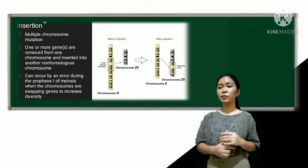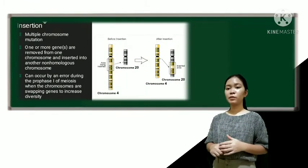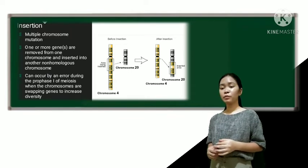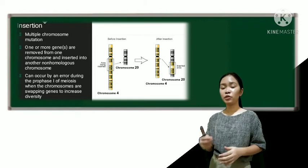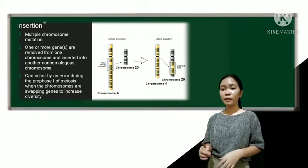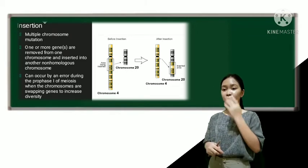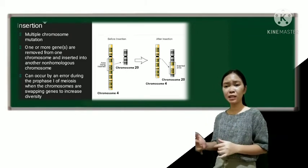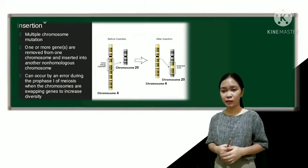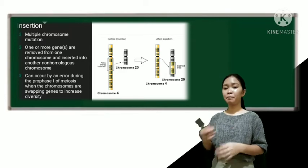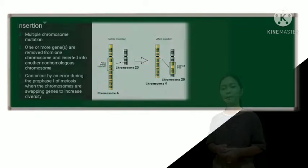So next is what we call the large-scale insertion. So here, it involves multiple chromosomes. For this type of insertion, there are one or more genes that are being removed from one chromosome and then being inserted into another non-homologous chromosome. So this can occur by an error during prophase 1 of meiosis, when the chromosomes are swapping genes to increase diversity.